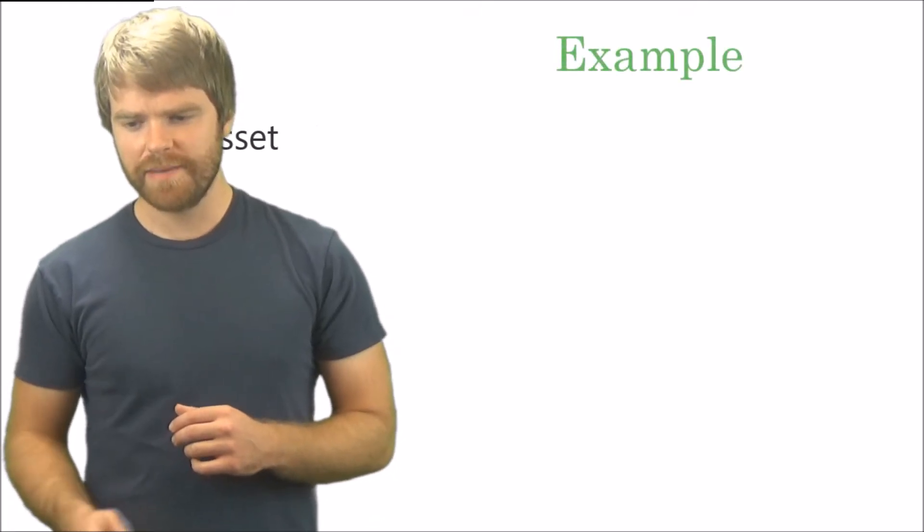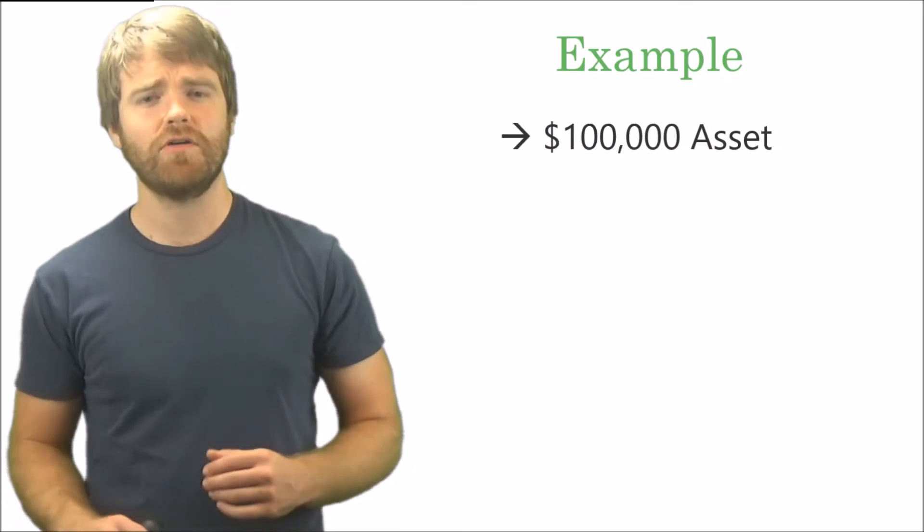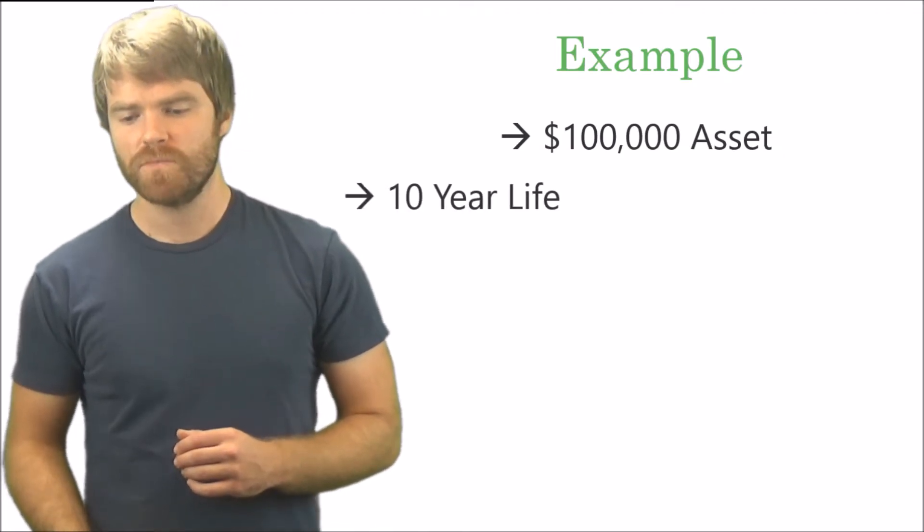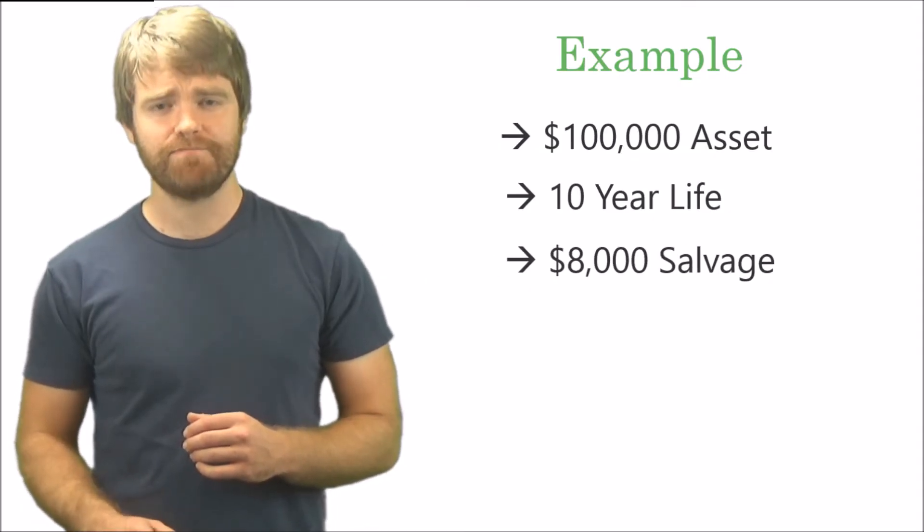In this example, let's say you buy a $100,000 asset—you can just call it a piece of equipment—and it has a 10-year life and $8,000 salvage. How do we calculate that straight line expense for depreciation?